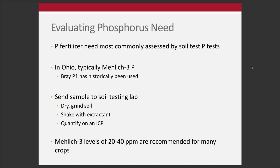Mehlich 3 levels — to give you some idea — 20 to 40 parts per million would be a recommended range. Anything over 100 would be very high, which is not uncommon. Around 60 parts per million would be the absolute most you'd ever want to apply phosphorus.